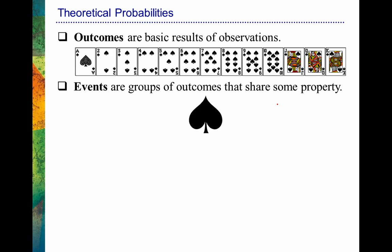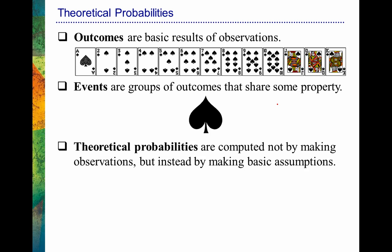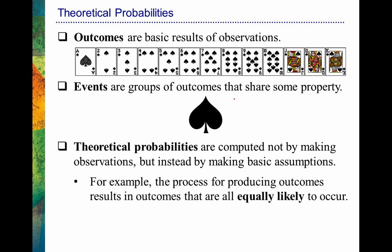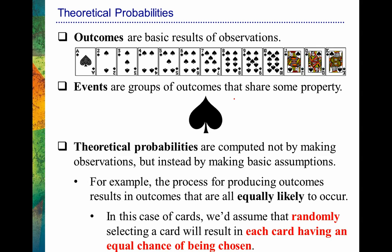Let's figure out the probability of randomly selecting a card and having it turn out to be a spade. The theoretical perspective of probability allows us to figure that out without actually making observations. We don't have to randomly select a card hundreds of times to find what proportion comes up spades. Using the basic assumptions we already talked about — understanding the properties of this deck — we should be able to figure out the probability. The process of selecting a card results in all cards being equally likely to be selected.